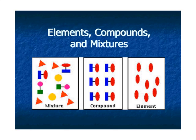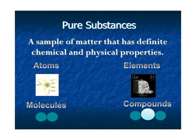This video will explain the difference between elements, compounds, and mixtures. A pure substance is a sample of matter that has definite chemical and physical properties. If you don't know what chemical and physical properties are, please go watch that video.